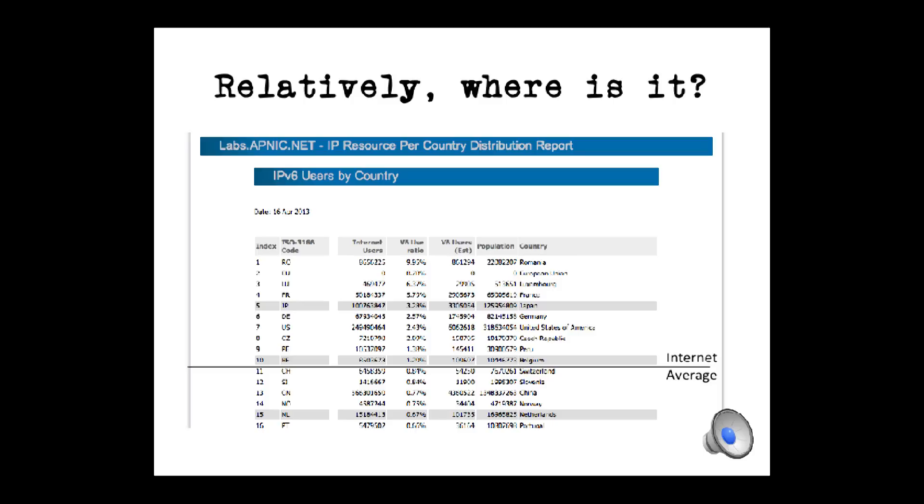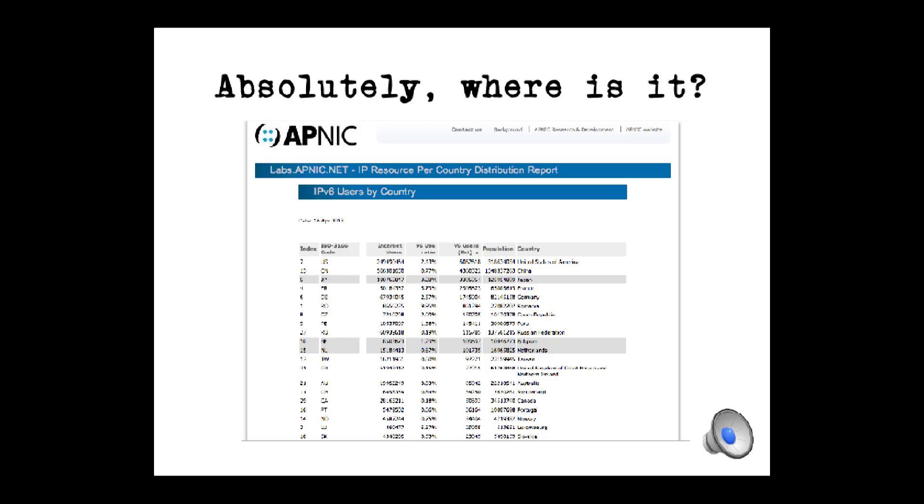In percentage terms, Romania has almost 10% of its population using V6. Luxembourg, well, it's only half a million people, 6%. France, Japan, Germany, you could read this as well as I can. And yes, there is the United States of America. The average, 1.2%, is actually picked up by only 10 countries. The other 190 aren't. So even in absolute terms, where we actually look at the estimated number of V6 users, and quite phenomenally, that's 6 million in America, 4.3 million in China, 3 million in Japan. Those are very, very big numbers. But on the other hand, if you look at the number of Internet users in those countries, there is still a very, very long way to go.